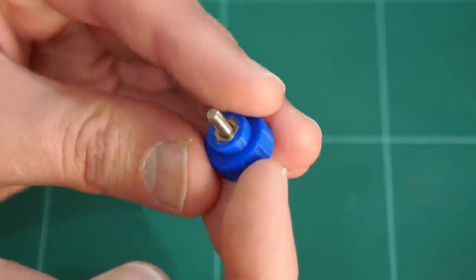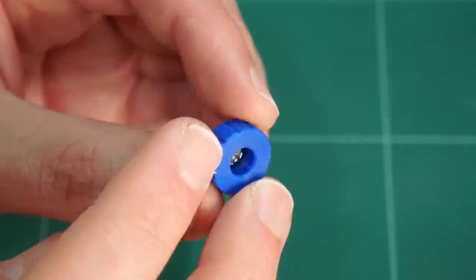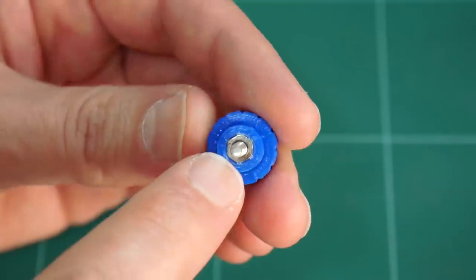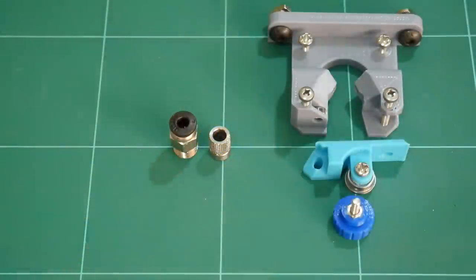For the Bowden knob, an M3 by 10 millimetre screw and one M3 hex nut. That hex nut nestles into the space provided. And lastly,